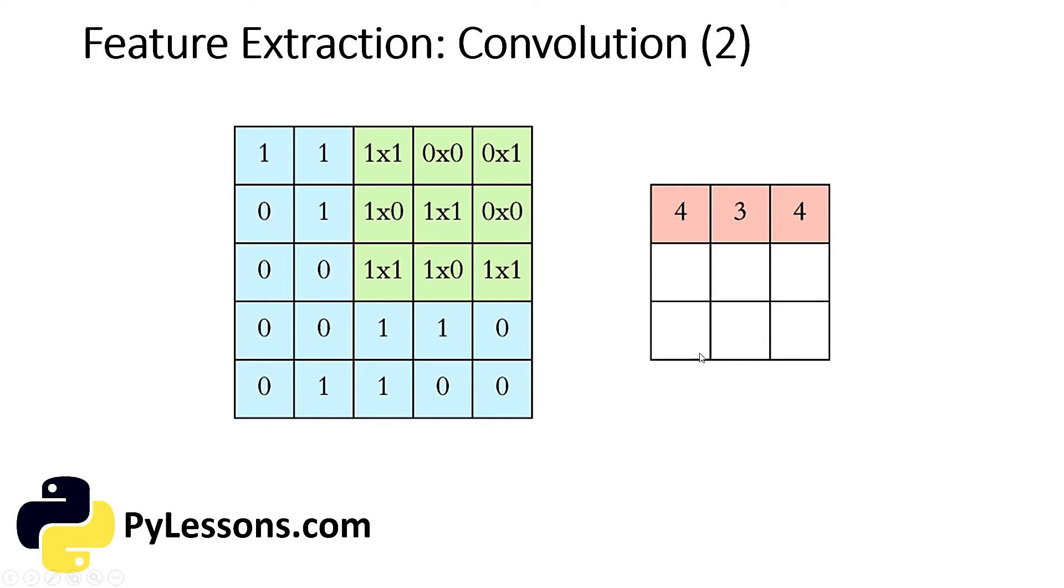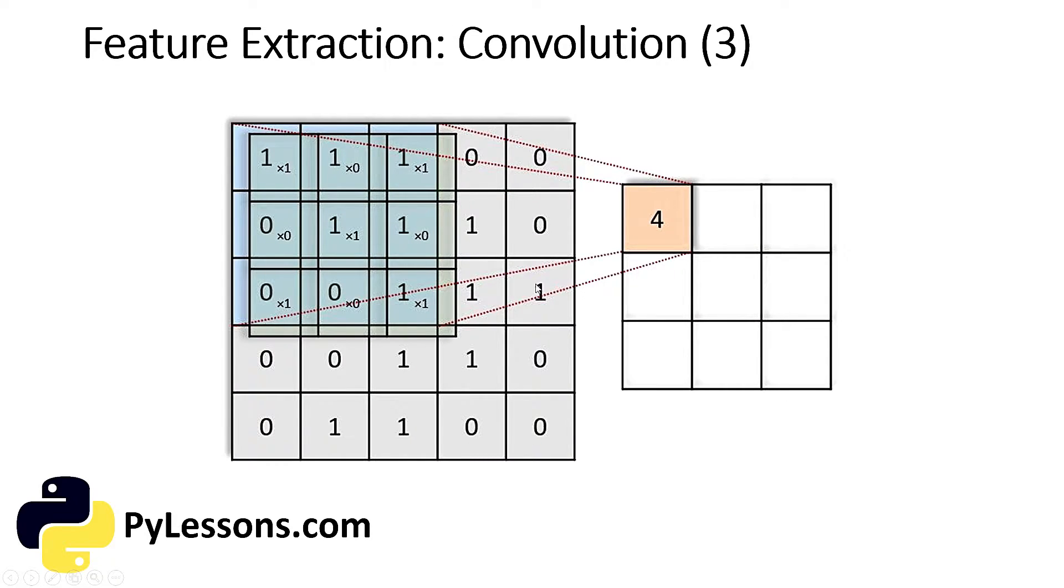How do we receive this, for example, 4? Here is another example. Our filter has numbers, and we multiply the first window with our filter. We receive a result, for example 1, then 0, then again 1, then 0, 1, 0, 0, 0, and 1. When you sum all of these results, we receive 4. We do all of this for all the windows.